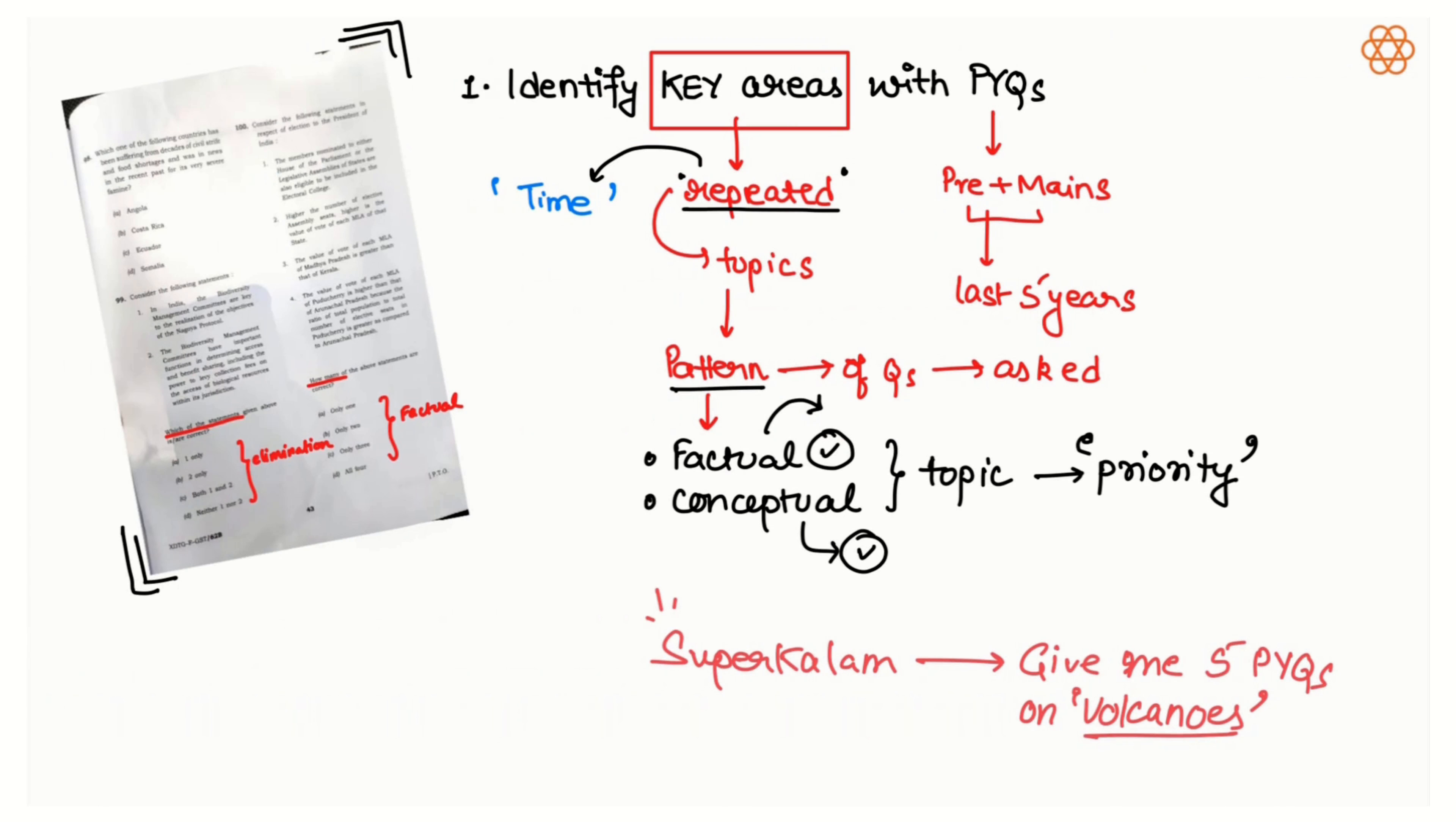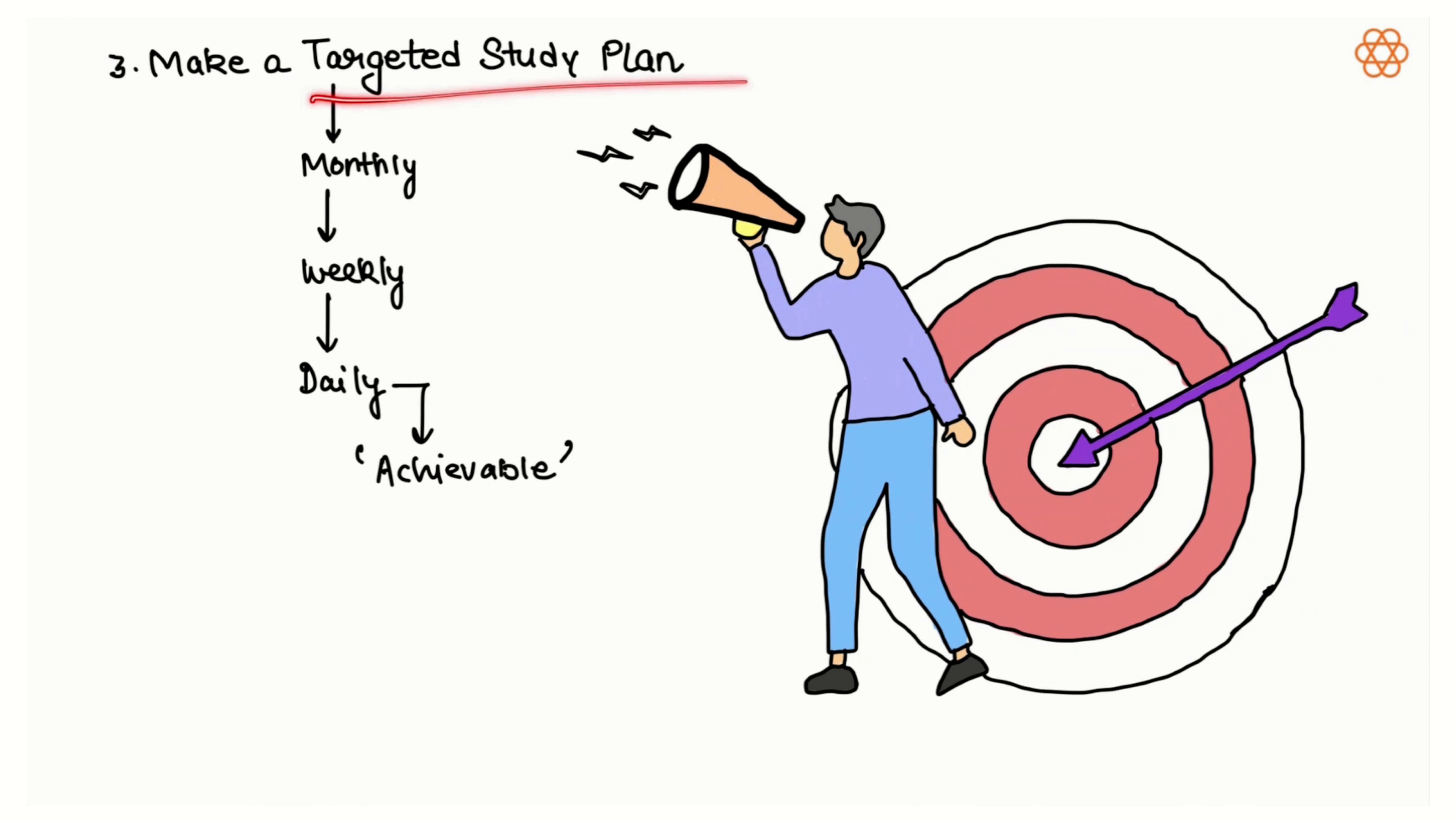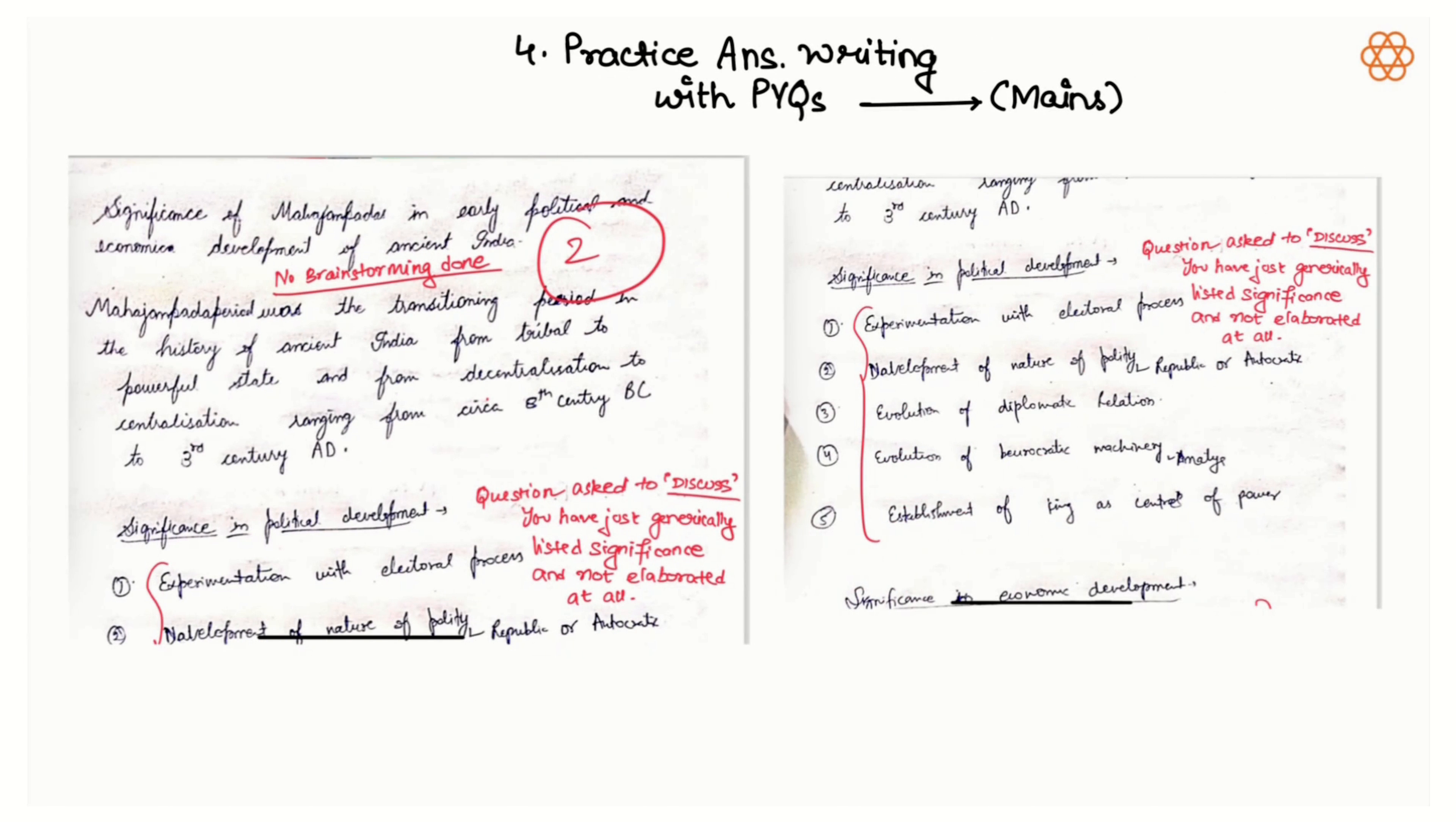So we have so far gone through three steps: identify key areas with PYQs, link PYQs with syllabus and practice those previous year questions, make a targeted study plan. Now going through the mains PYQs practice is the biggest key to cracking or covering the backlog problem.